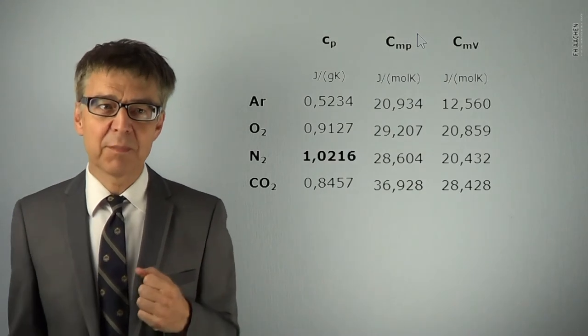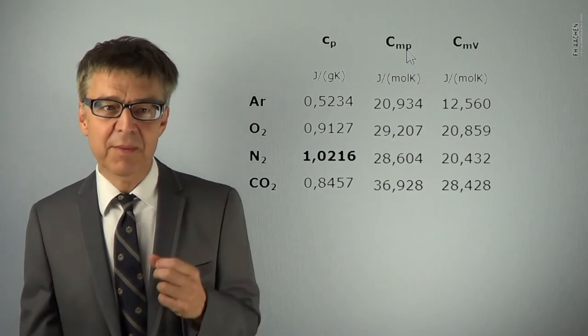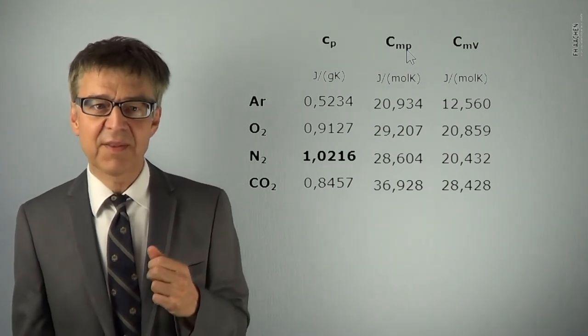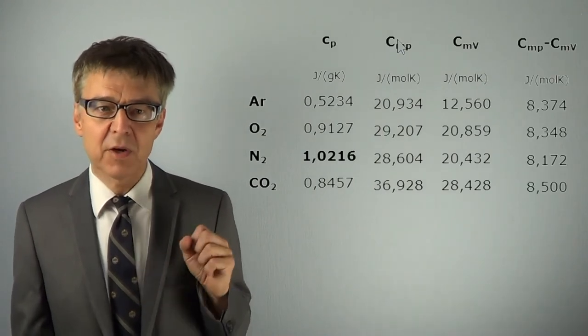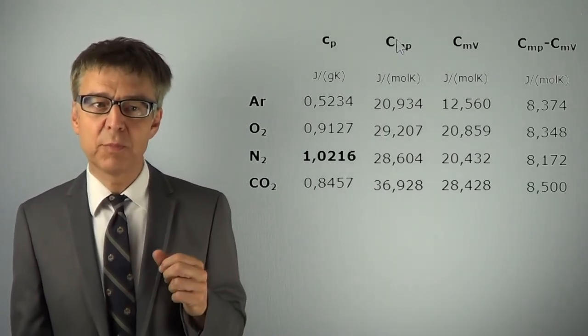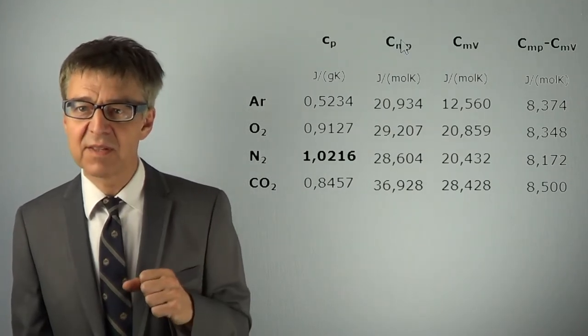Another remarkable feature of the heat capacities of gases. The difference between the isobaric molar heat capacity and the isochoric molar heat capacity has always a value of about 8.3 J per mol in Kelvin. And this is the ideal gas constant.